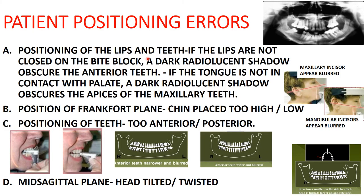Patient positioning errors: if the lips are not closed on the bite block, a dark radiolucent shadow obscures the anterior teeth. If the tongue is not in contact with the palate, a radiolucent shadow will obscure the apices of the maxillary teeth. These are errors in the positioning of the lips, teeth, and tongue.